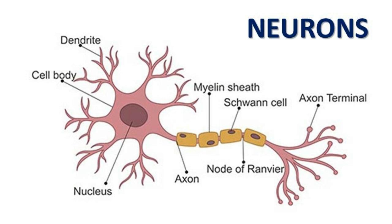The neuron has a head-like central structure called the nucleus or cell body, also called the cytone. There are dendrites branching from it, covered by the myelin sheath. In the center there is a tail-like structure called the axon, ending in the axon terminal. There is also the node of Ranvier.